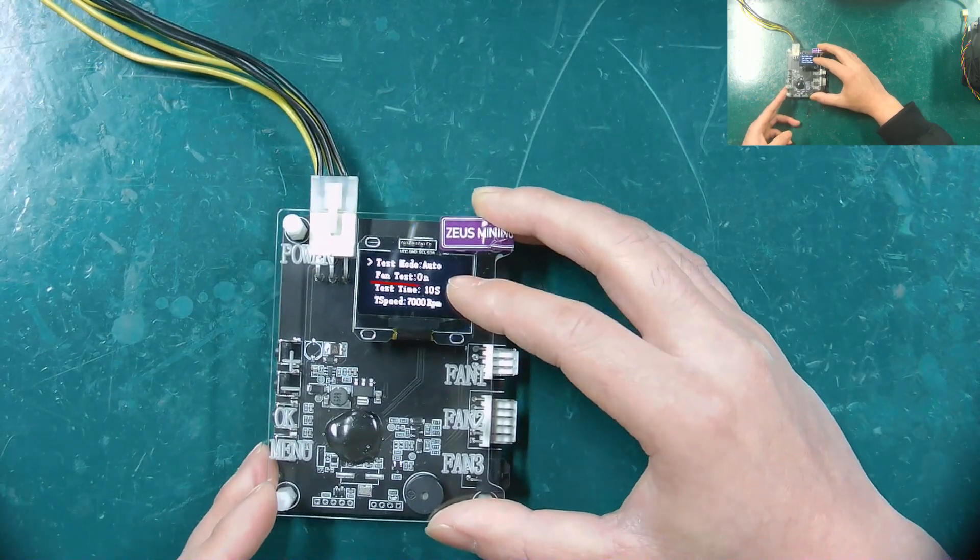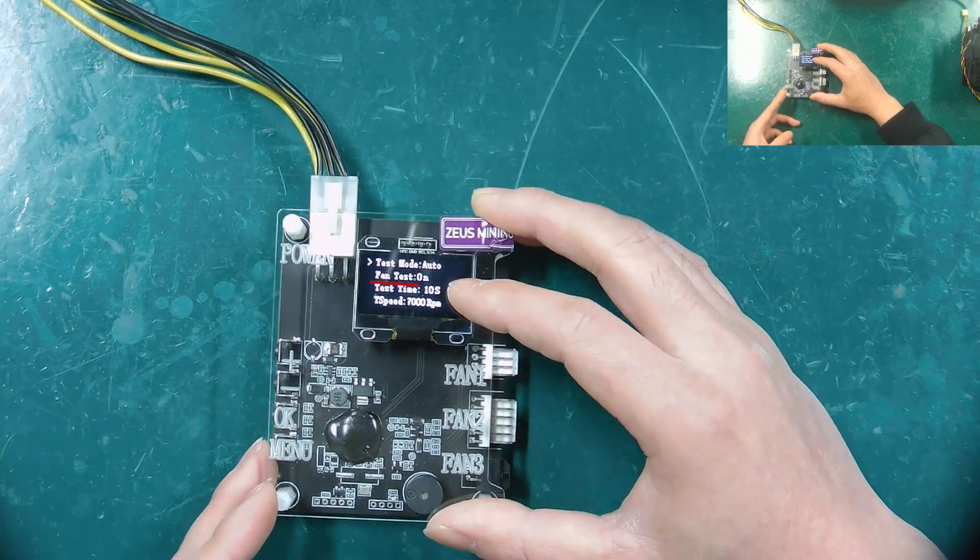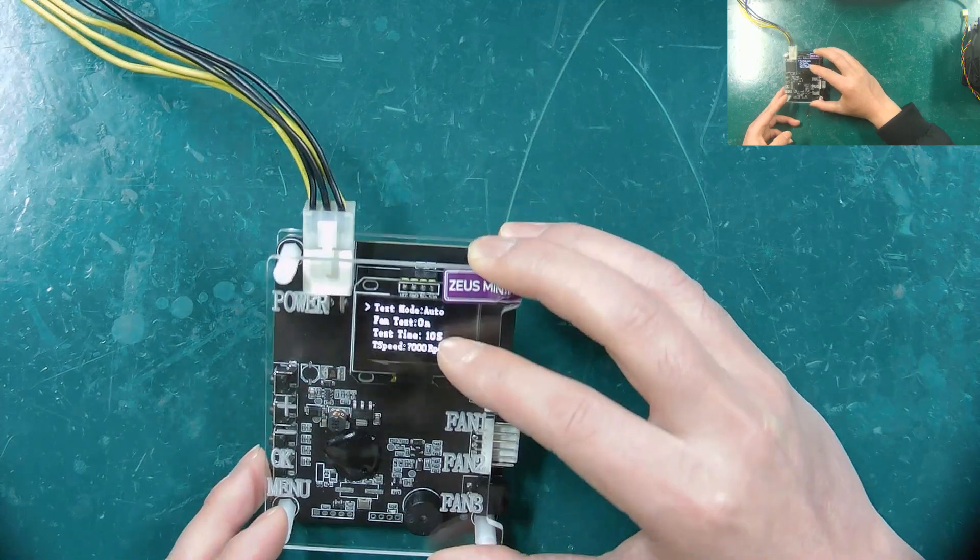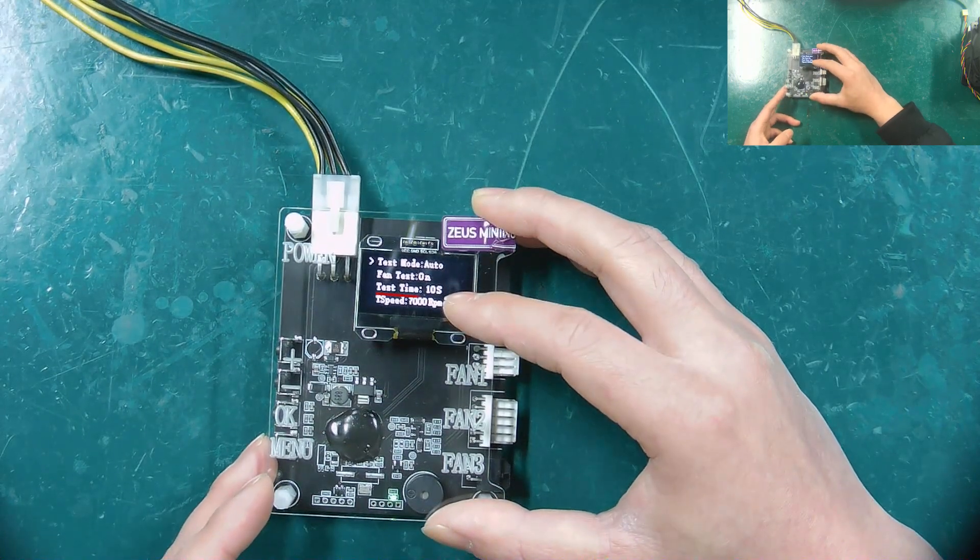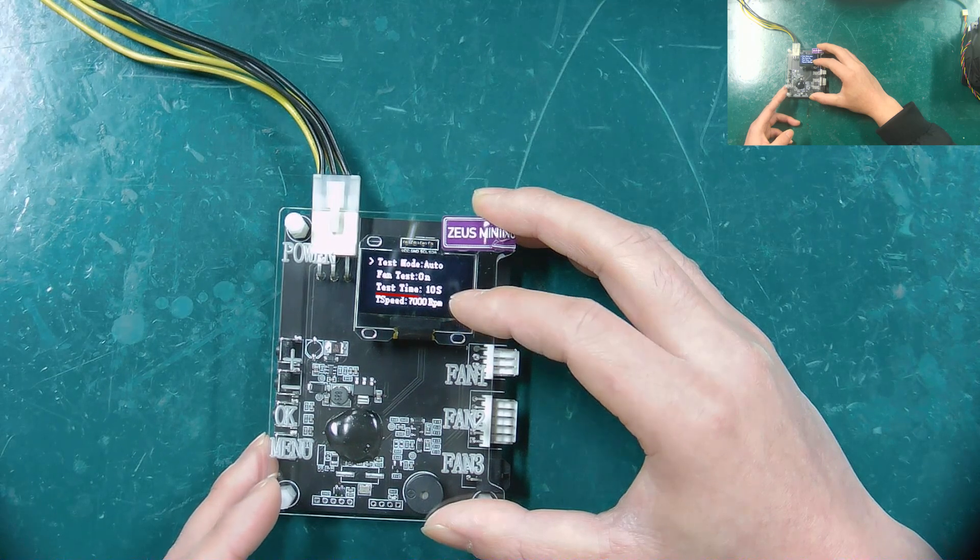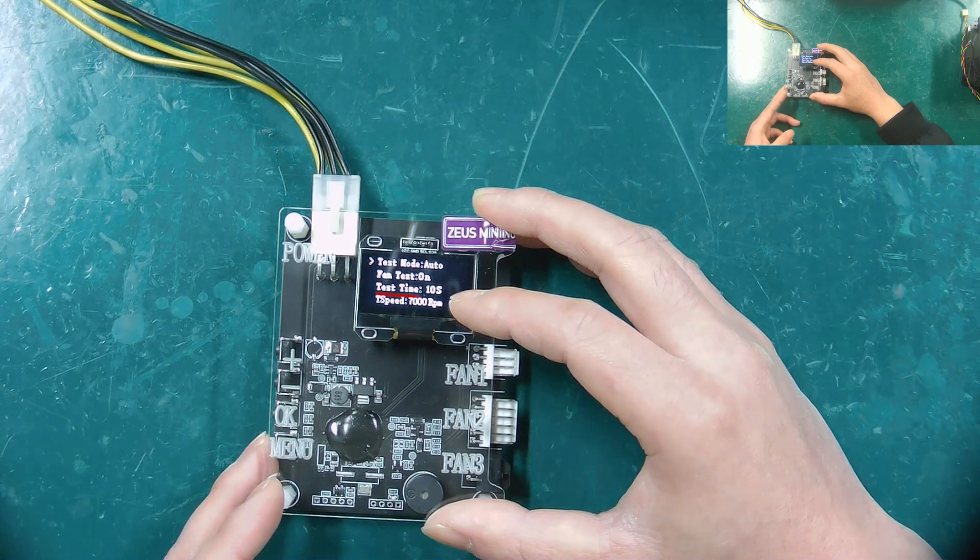Fan test will display the test result, but in manual mode, the test result will be turned off. Test time represents the time of testing, which is usually set to around 10 seconds to 15 seconds.